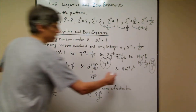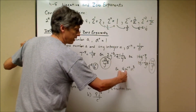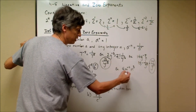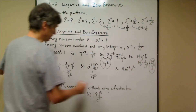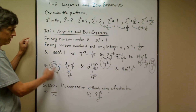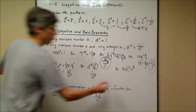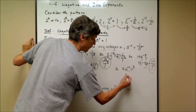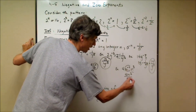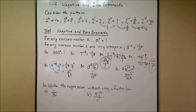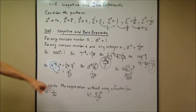Here's another one: 4 times m^(−4) times n^3. The only concern is the m to the negative 4. The 4 and n^3 stay on top, and the m^(−4) moves down to the denominator as m to the positive 4th. So you get 4n^3 over m^4. You have to get used to seeing negative exponents and knowing to move them.